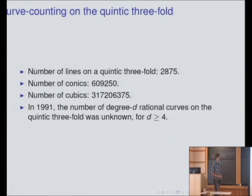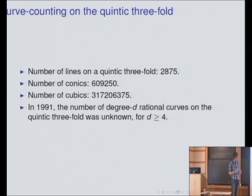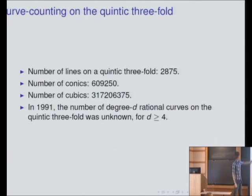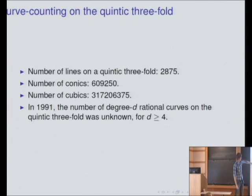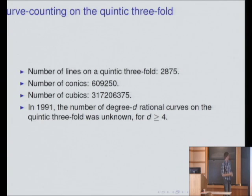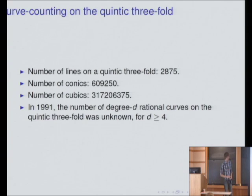Now some less trivial Gromov-Witten invariants. If our manifold is a degree 5 hypersurface in CP4 — a quintic threefold — then the number of lines is 2,875. I also know the number of conics and the number of cubics. And in 1991, no one knew what the number of degree D rational curves on the quintic threefold was for degree greater than or equal to 4.